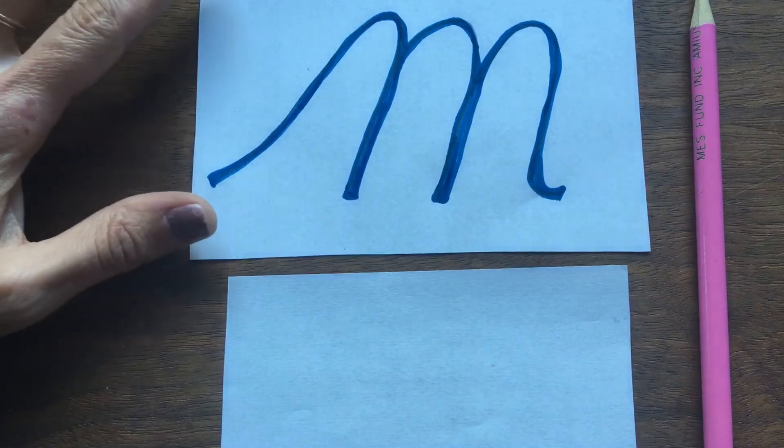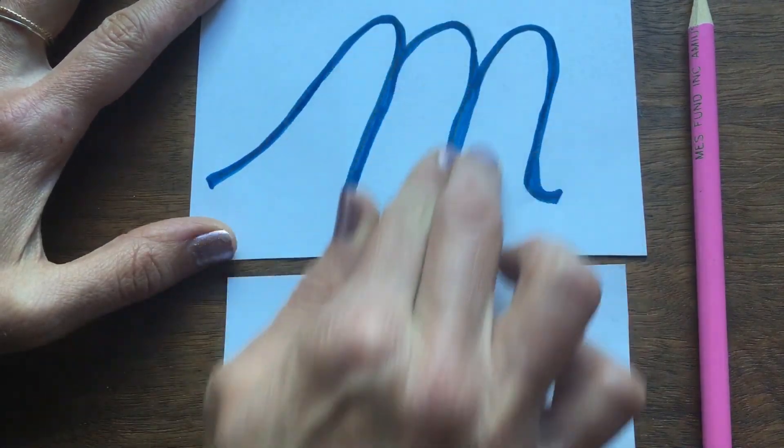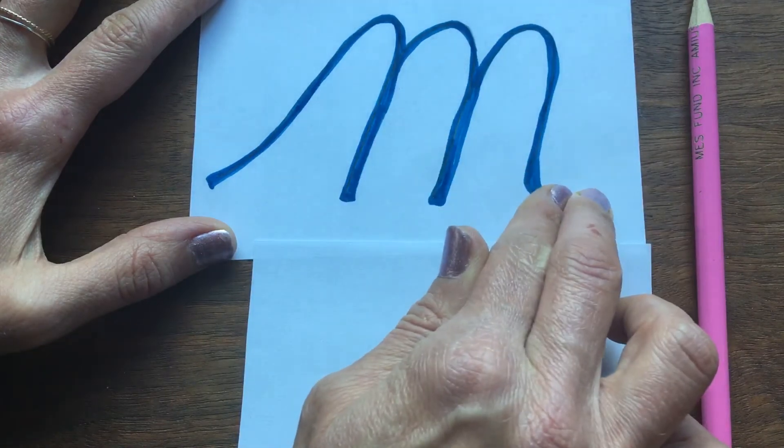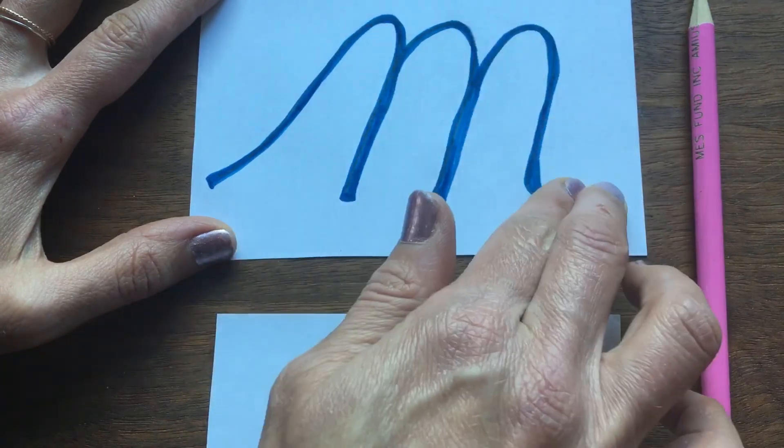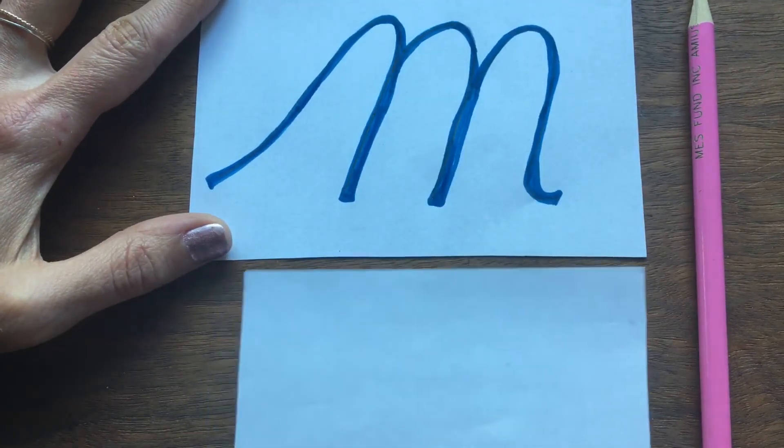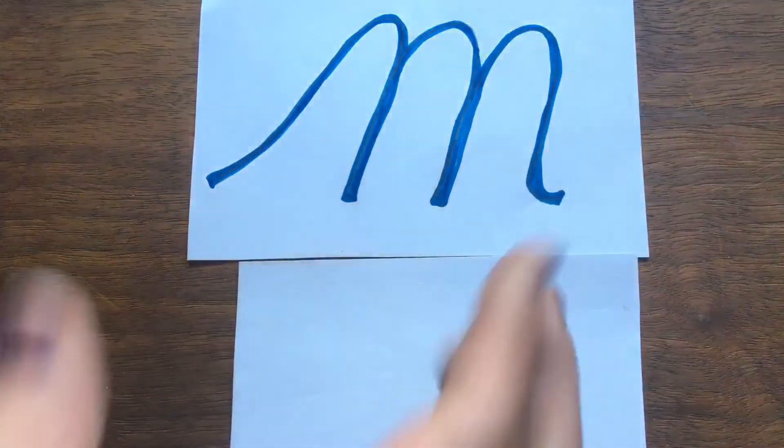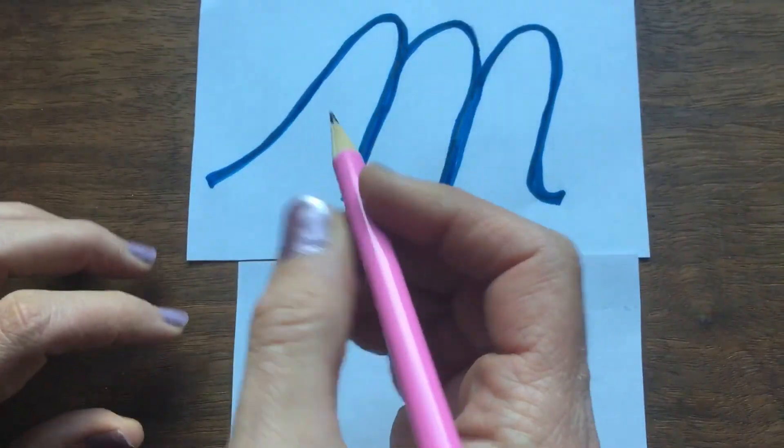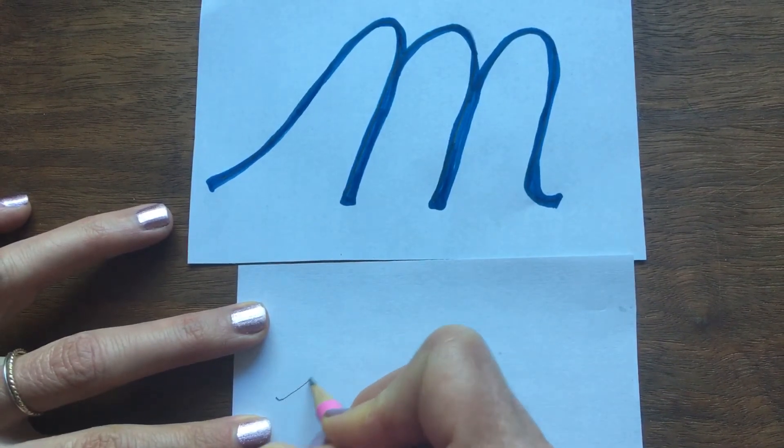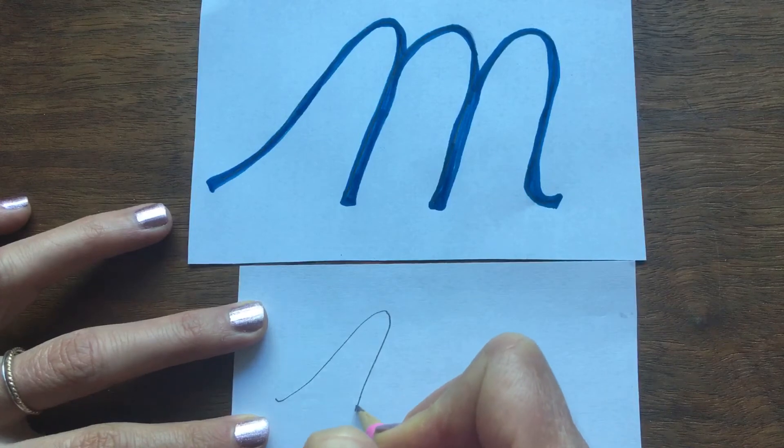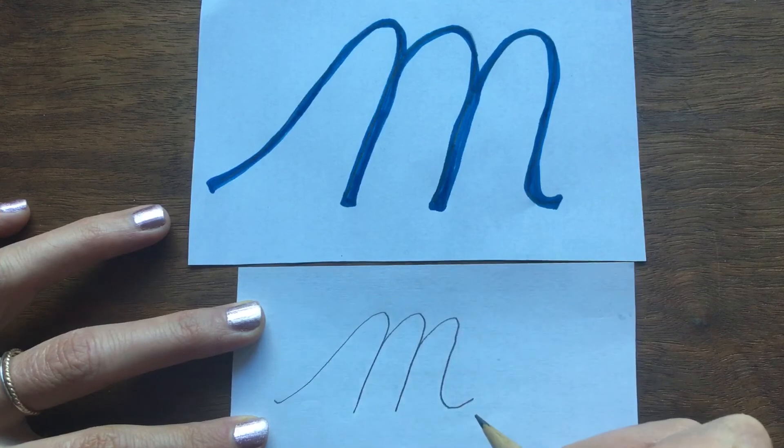I'm going to trace mmm. Watch. mmm. Now I'll use my pencil to make mmm on my paper. mmm.